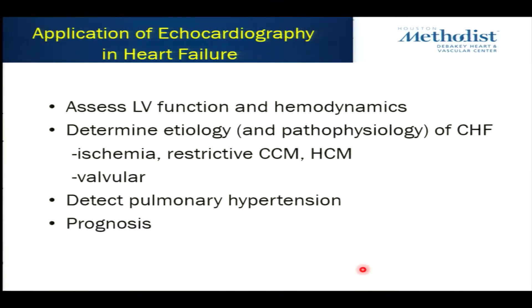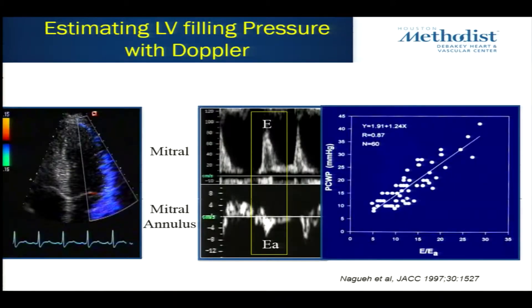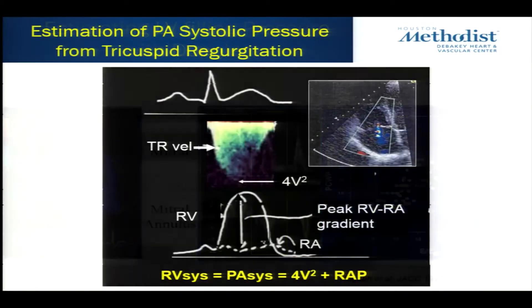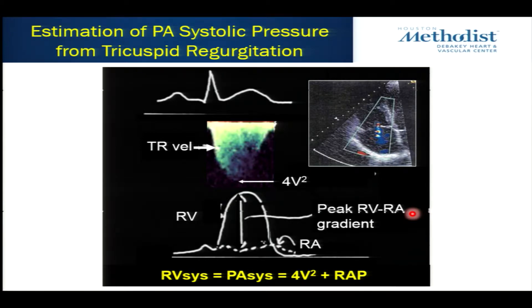So what do we use echo for in heart failure? You use it to assess LV function, determine the etiology — is it systolic, diastolic, or can we help you further? Detect pulmonary hypertension and evaluate prognosis, and also estimate cardiac output by knowing velocity and cross-sectional area of flow. This was first published 21 years ago by Dr. Naga, a big specialist in diastolic heart failure, using tissue Doppler — marrying tissue Doppler with what's going on in the mitral inflow — to predict pulmonary capillary wedge pressure completely non-invasively with echo Doppler techniques.